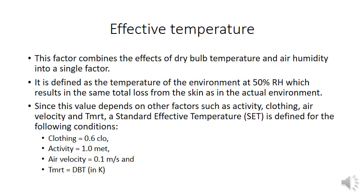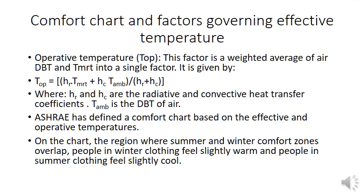Effective temperature is a single parameter that combines the effect of dry bulb temperature and air humidity. It defines the temperature at which an environment at 50% RH produces the same total heat loss from the skin as in the actual environment. Its value depends on activity, clothing, air velocity, and mean radiant temperature (TMRT). The Standard Effective Temperature (SET or ET*) uses clothing of 0.6 clo, activity of 1 met, air velocity of 0.1 m/s, and the dry bulb temperature. The operative temperature is the weighted average of air dry bulb temperature and TMRT using radiative and convective heat transfer coefficients.